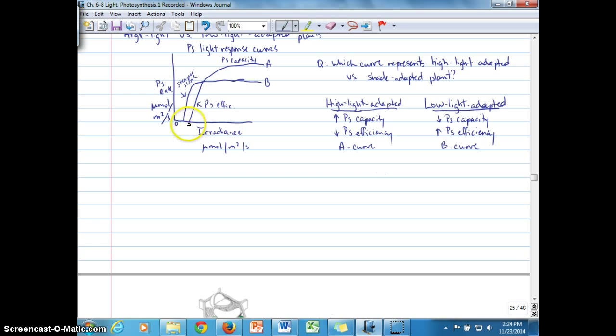You also might note here the difference in the light compensation points, such that the low light adapted plant can take advantage of as low light as possible here, given its consistent or long-term exposure to low light. So low light adapted plants have a lower light compensation point than high light adapted plants. And with that, low light adapted plants tend to have a higher concentration in chlorophyll in order to take advantage of as much light energy as possible.